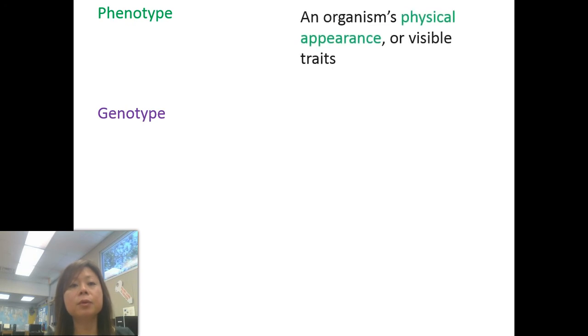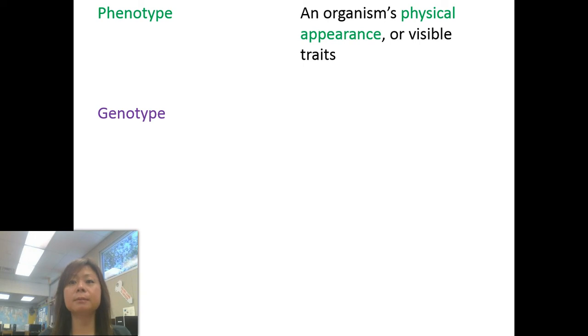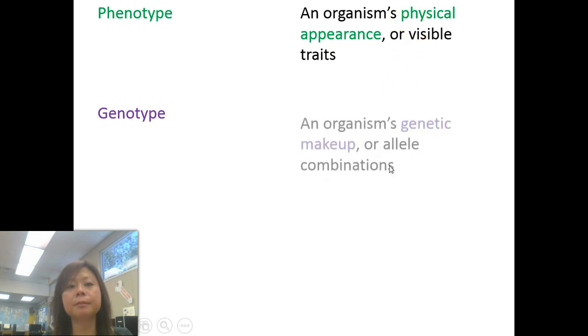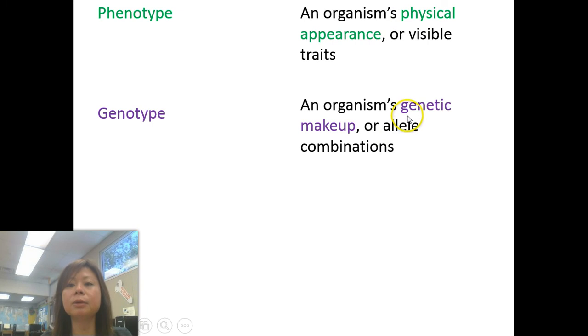There are two important words you need to know. Phenotype is an organism's physical appearance. You can remember because phenotype and physical appearance both start with pH. Genotype is an organism's genetic makeup or allele combinations.